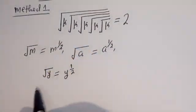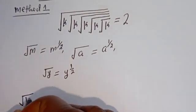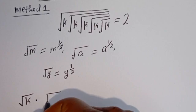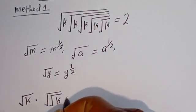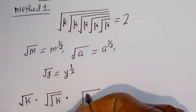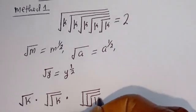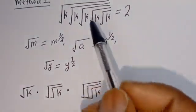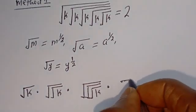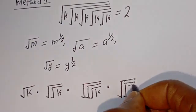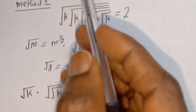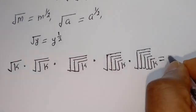Then this can be written as: the first term is square root of k. Multiplied by the second one, we have square root of square root of k. Multiplied by the third one, we have square root of square root of square root of k. And finally, we have square root of square root of square root of square root of square root of k. Then everything is equal to 2.